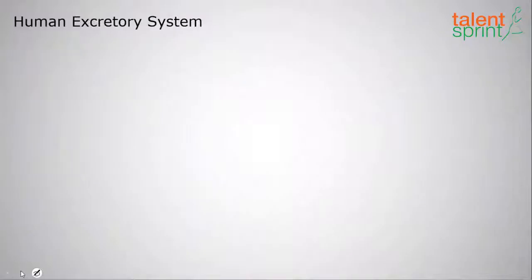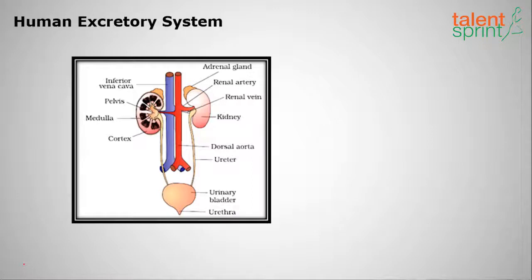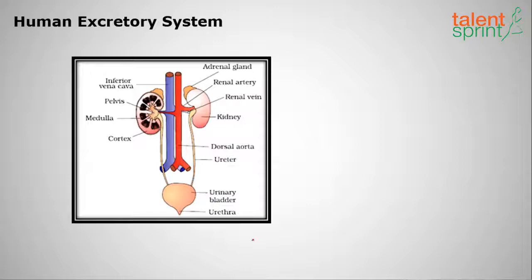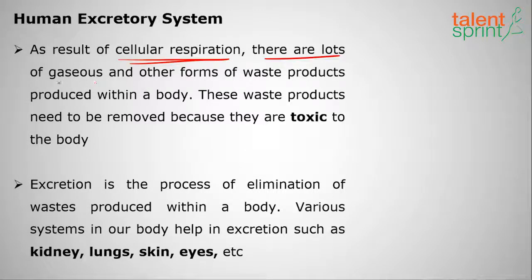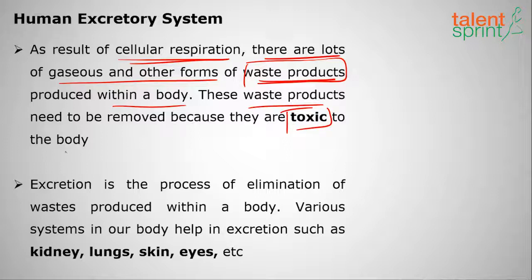Welcome to Talent Sprint. In this series of biology lessons, we will discuss the human excretory system. The undigested food is excreted through the anus as part of the digestive system. The unwanted materials in the blood or body must be removed — this is done by the human excretory system through the kidneys. As part of cellular respiration, there are lots of gases and other waste products produced in the body. These waste products must be removed as they are toxic or harmful to the human body. Excretion is the process of elimination of these wastes produced within the body.